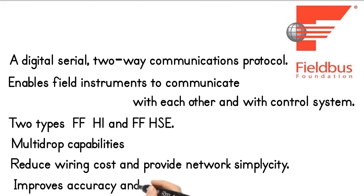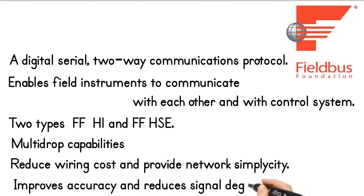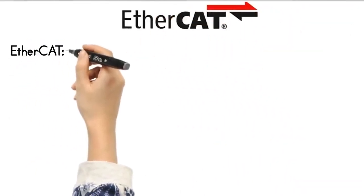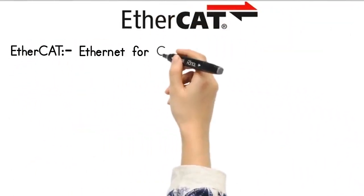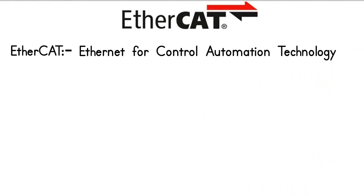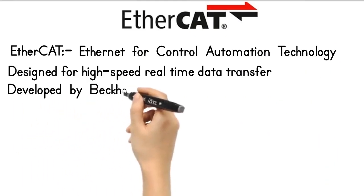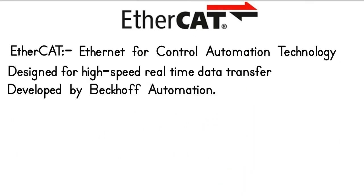Foundation Fieldbus transmits data digitally, which improves accuracy and reduces signal degradation. EtherCAT Protocol. EtherCAT, or Ethernet for Control Automation Technology, is designed for high-speed real-time data transfer and precise timing control. EtherCAT was developed by Beckhoff Automation and designed specifically for high-speed, deterministic, and synchronized data exchange.